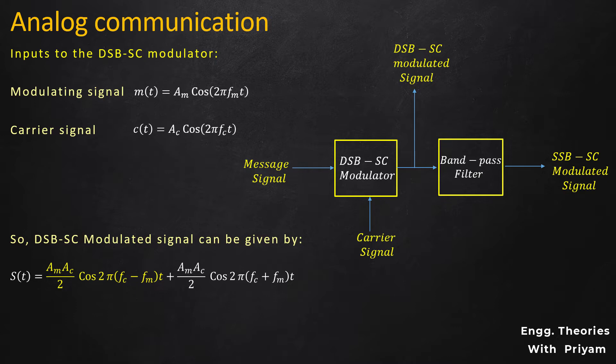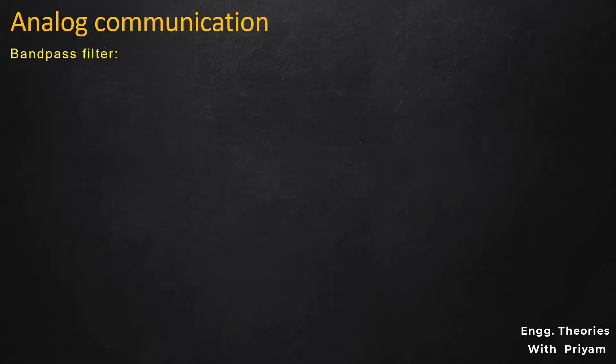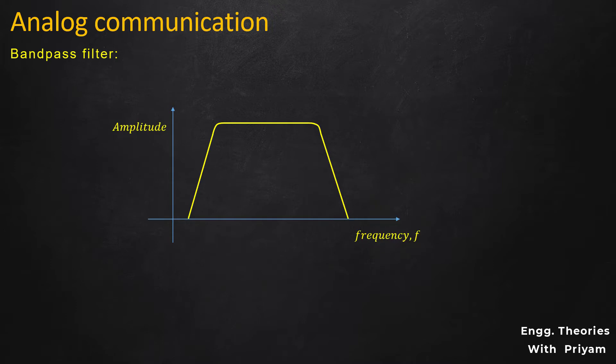So it can be said that proper generation of the SSBSC modulated signal from the DSBSC modulated signal depends entirely on the accuracy of the bandpass filter. A bandpass filter allows signals of a certain frequency or band of frequencies to pass through as-is. The range of accepted frequencies is called the passband, and the size or range of the passband is called the bandwidth.